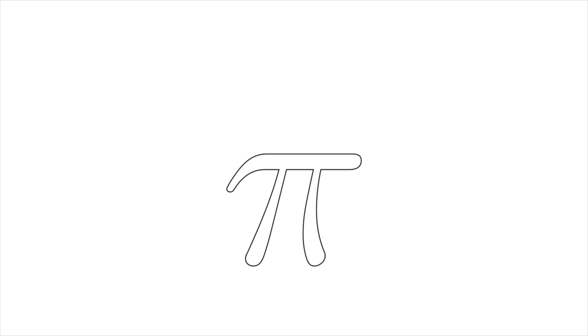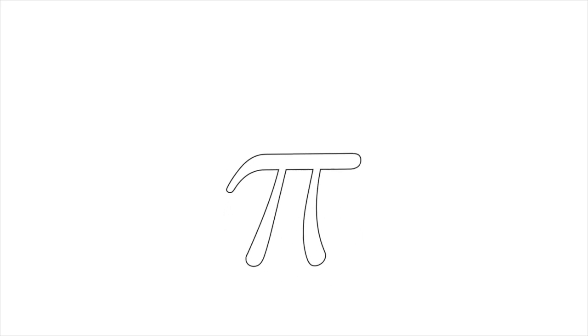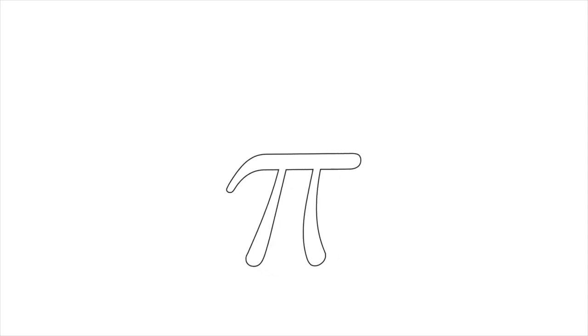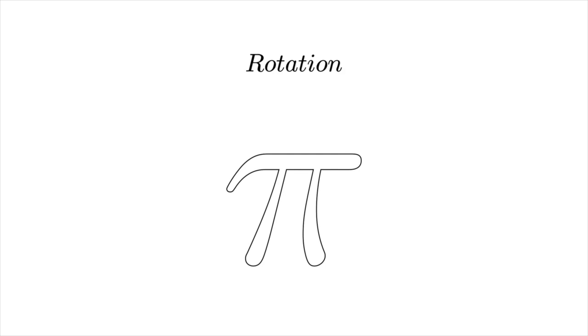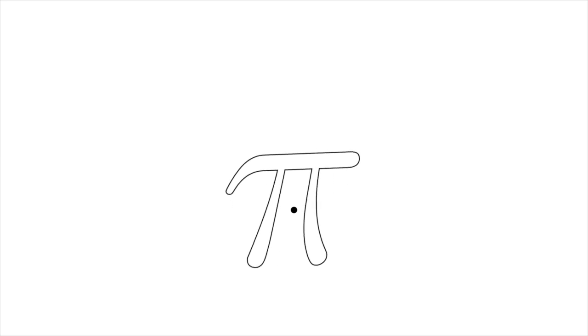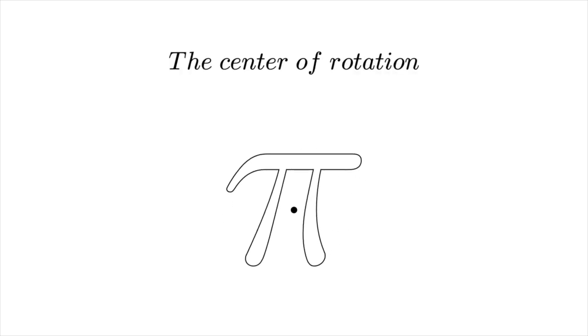The other important transformation is the rotation. Here, the pi symbol preserves its shape, size and location, but the direction it faces changes. With this transformation, we can flip it upside down. Each rotation has a center. This is the one point that does not move at all during the rotation. Notice that the point on the screen stays still while the pi symbol is rotating.